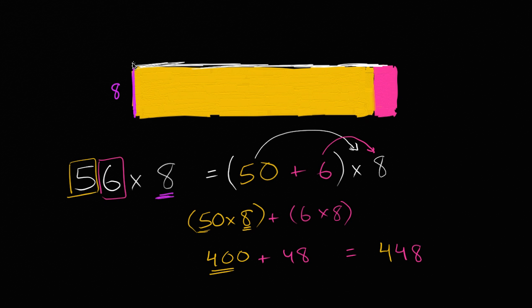So this first section right over here, this has length 50, that has length 50, and then this second section, this has length 6. And the reason why we broke it up this way is because we can maybe in our heads or without too much work figure out what 8 times 50 is, and then separately figure out what 8 times 6 is. So separately figure out the areas of these two pieces of the big rectangle, and then add them together.